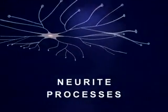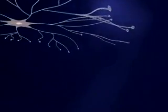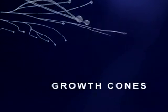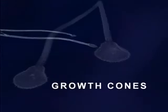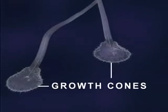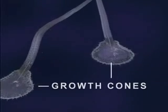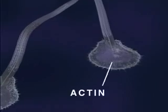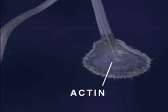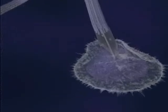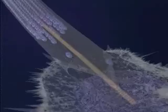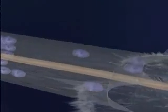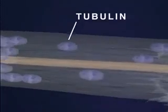At the end of each neurite is a growth cone where structural proteins are assembled to form the cell membrane. Two principal proteins involved in growth cone function are actin, which is responsible for the pulsating motion seen here, and tubulin, a major structural component of the neurite membrane.